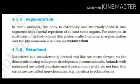Notochord is another feature which classifies the animals. Notochord is a mesodermally derived rod-like structure that forms on the dorsal side during embryonic development. Animals with a notochord are called chordates, and those animals which do not form this structure are called non-chordates. Example: Porifera to Echinoderms.